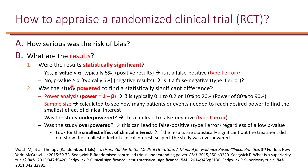If the p-value is greater than alpha, the results are not statistically significant, which could be due to a false negative or a type 2 error. In order to evaluate type 2 error, we need to know the power of the study. Anytime the results are not statistically significant, you should always look at the power to see if the study was actually powered to find a difference before you conclude that there is no difference between the groups.